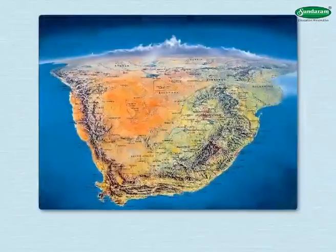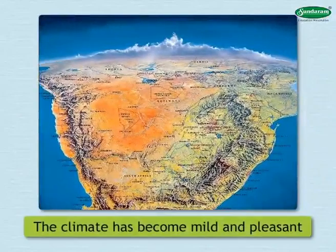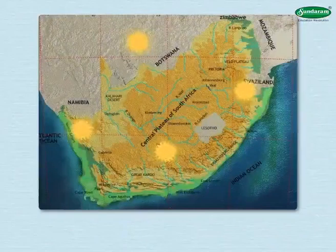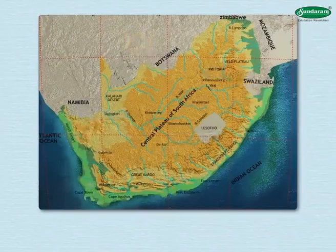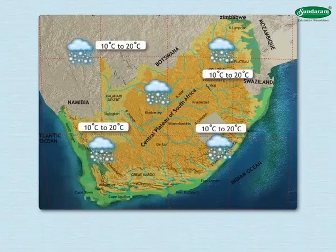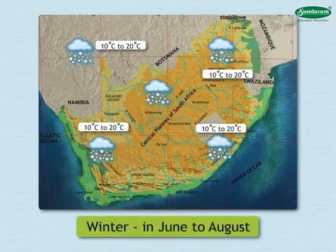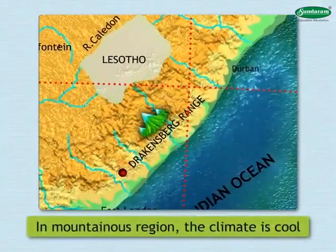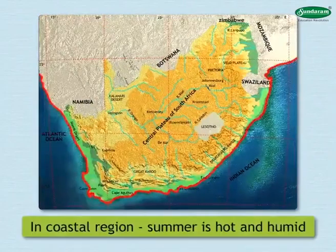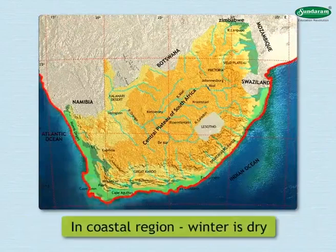As this country is located in the temperate region, its climate has become mild and pleasant. In summer, temperatures range from 20 to 32 degrees Celsius, whereas in winter — June to August — they range between 10 and 20 degrees Celsius. In the mountainous areas, the climate is cool due to altitude. In the coastal areas, summer is hot and humid and winter is dry.